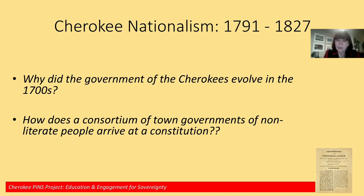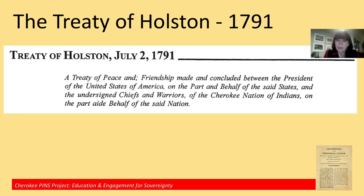By 1791, we really do begin speaking in terms of nationality. The first time we see this language comes up in a treaty in 1791 — the Treaty of Peace and Friendship — which refers to 'the Cherokee Nation of Indians.' The Cherokees had already made 11 treaties before this — 10 with Great Britain and one with the United States — and in all of those previous treaties, the word 'nation' had never been used in reference to the Cherokees. So this is the first time the Cherokees began to assert nationality in a political sense.